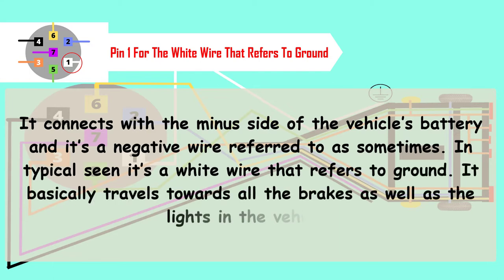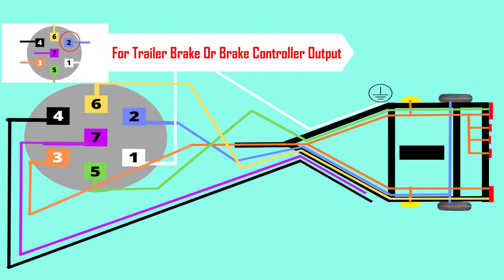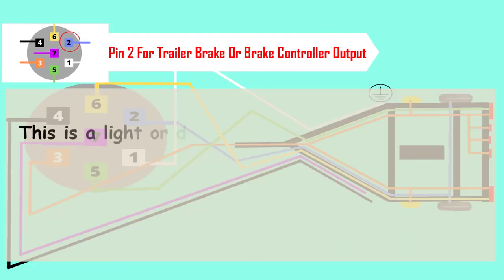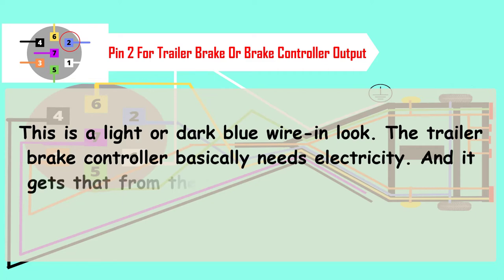Pin 2 is for the trailer brake or brake controller output. This is a light or dark blue wire in look. The trailer brake controller basically needs electricity and it gets that from the tow vehicle for working on the trailer brakes with a specific amount of power.